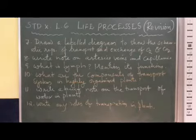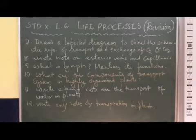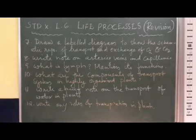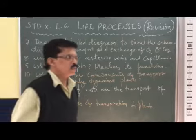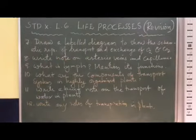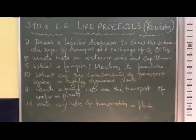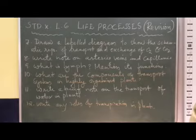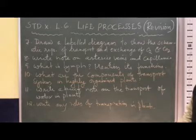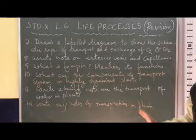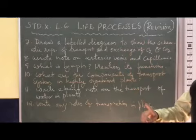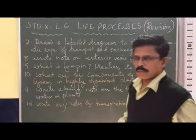As the blood flowing through the capillaries is under very high pressure, the blood is filtered through the wall of the capillaries, which are only one cell thick. The fluid filtered through the wall of the capillaries is called lymph, and it contains plasma proteins and blood cells. Lymph enters the space between the tissues, filling the space between them — hence lymph is also called tissue fluid.